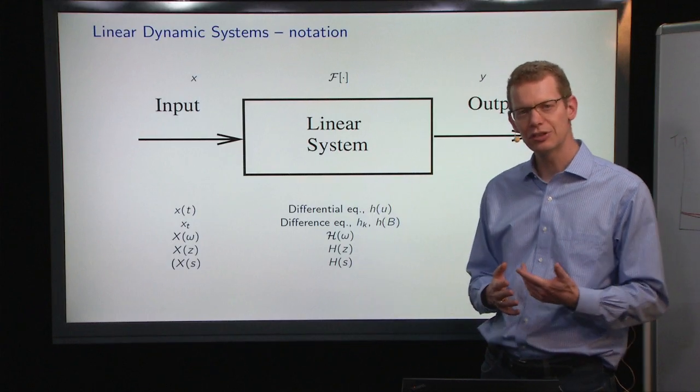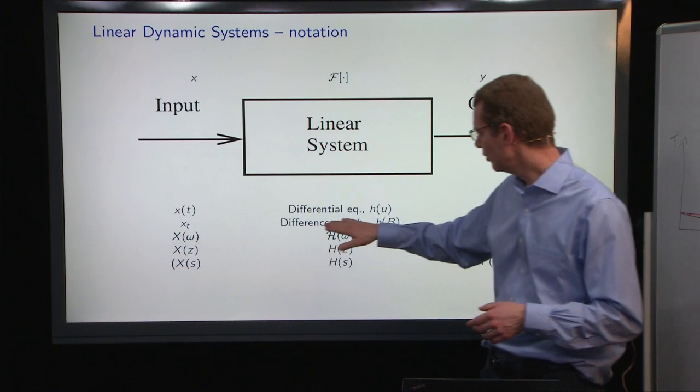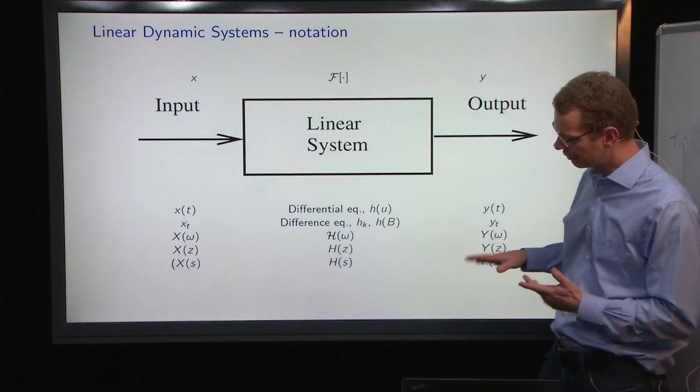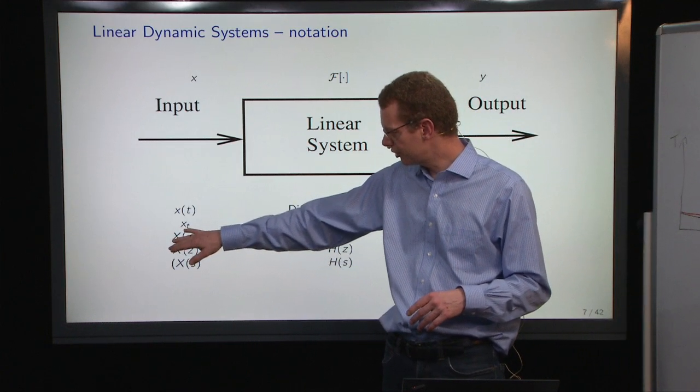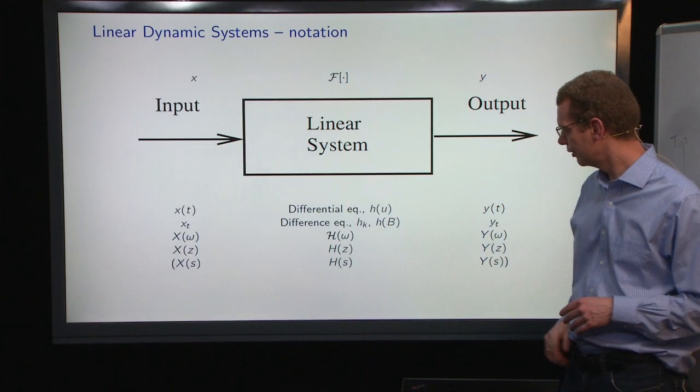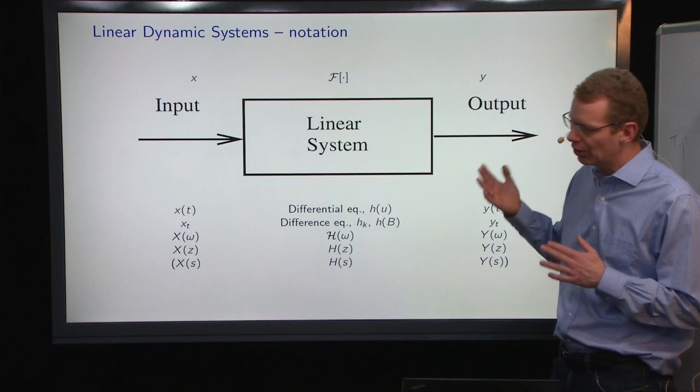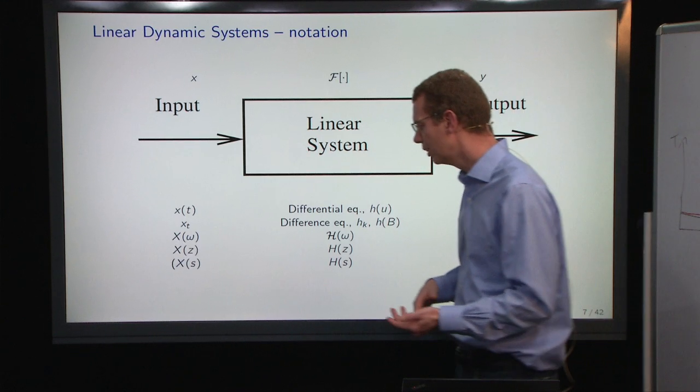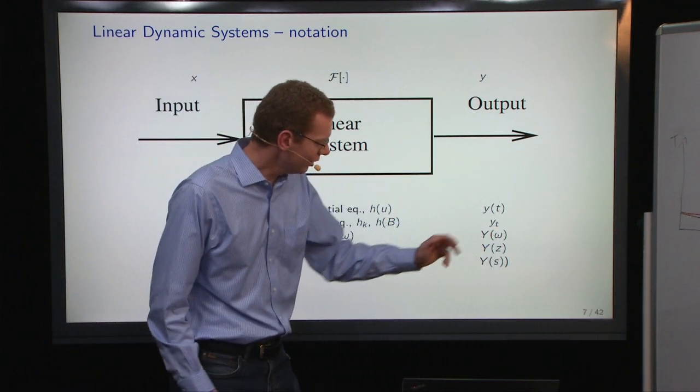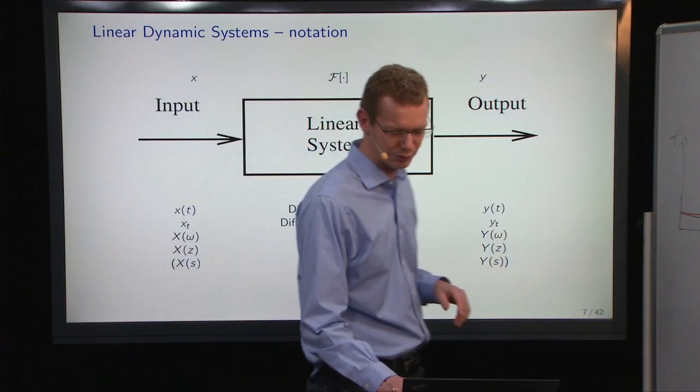Now, linear systems can be defined both in continuous time where you have input x, and the system could be a differential equation, and you have the observation yt. Or in discrete time, you have x subscript t, then it's a difference equation, and you have what's called the impulse response here. We have yt as the observation. We can also do this in a frequency domain, in a continuous thing with omega, in a Z domain for discrete time, and we can also do the Laplacian, which we'll skip for now.